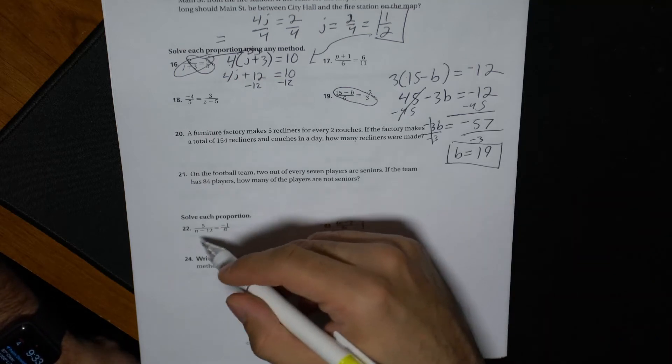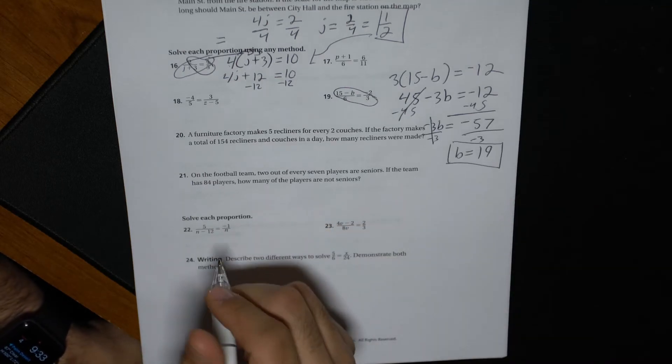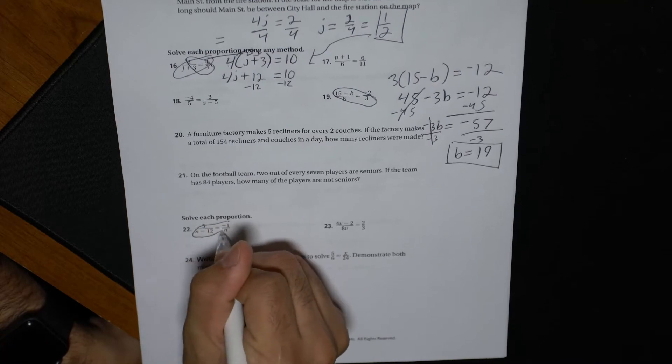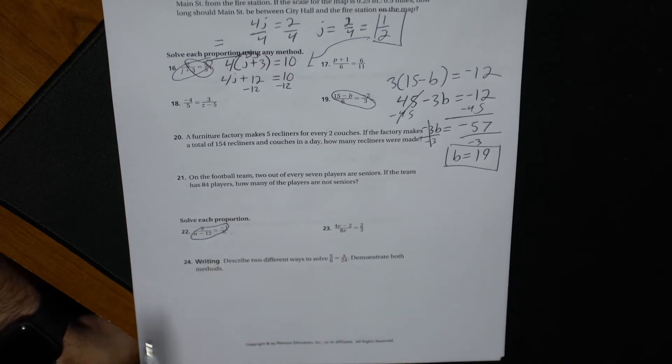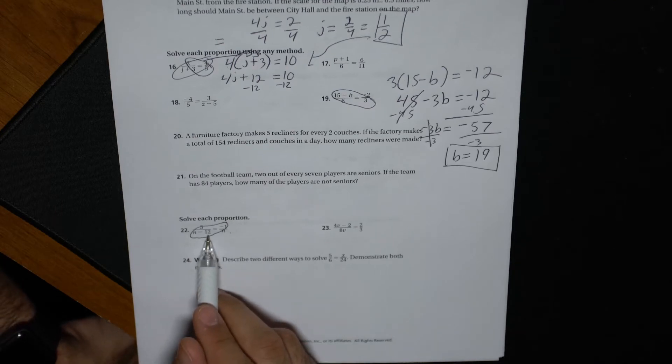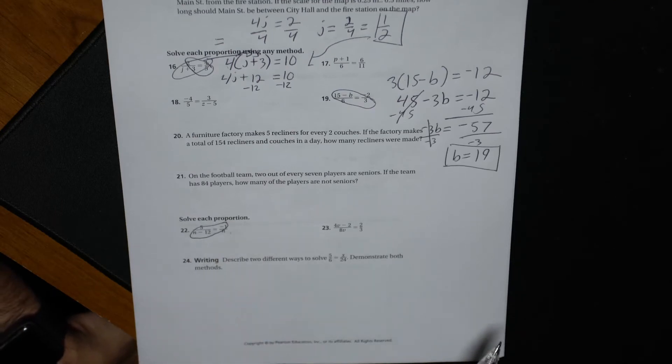Now, we're going to jump over here to 22. Same process. Now notice how we have variables now on both sides. So that's going to be a trick here. And we can't just say minus 12 and minus 12 and we're done. We can't say that.